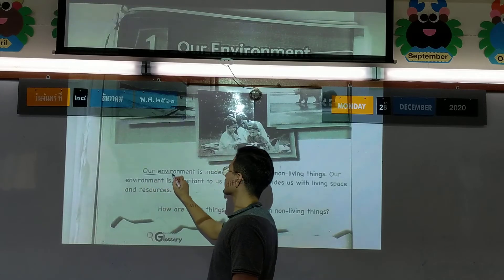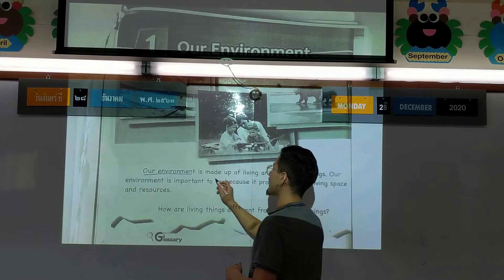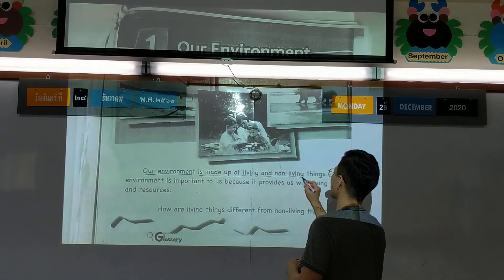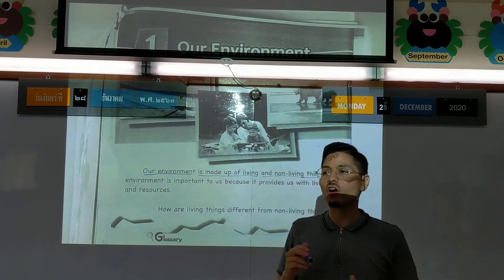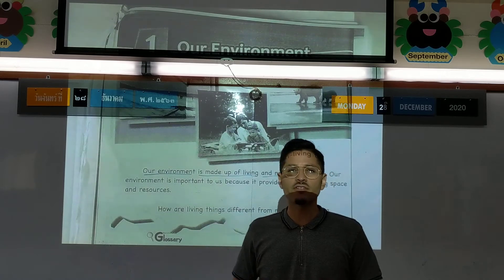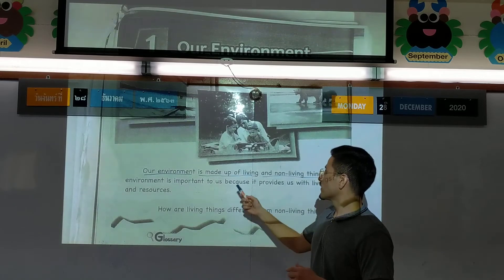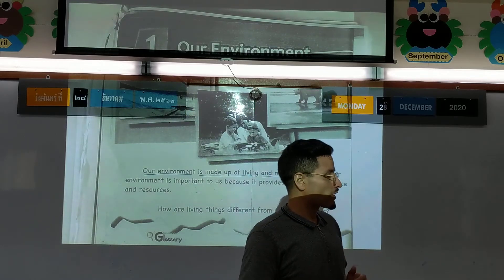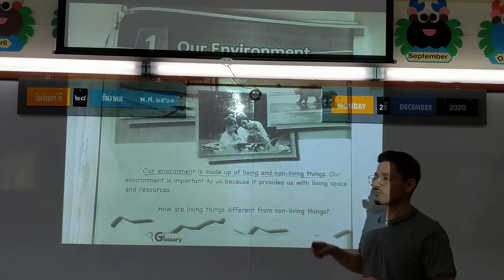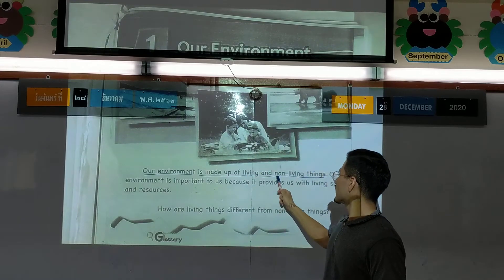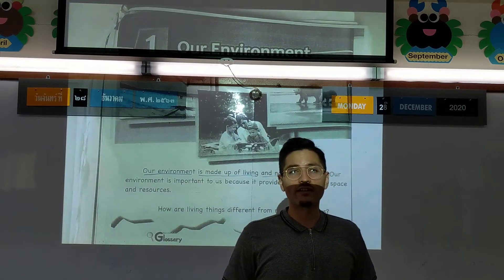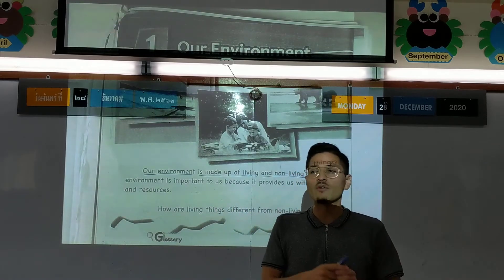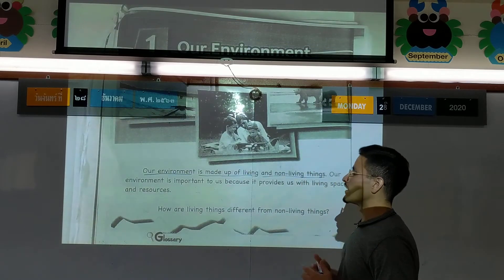Our environment is made up of living and non-living things. If you look around your home, your school, or outside, you see different things. You see people - they are living. You see the dog - he is living. You see the tree - that is living. At school you look around, you see your desk - that is non-living. You see the marker - that is non-living. You see the fan - that is non-living.